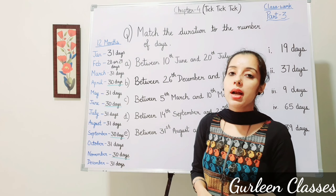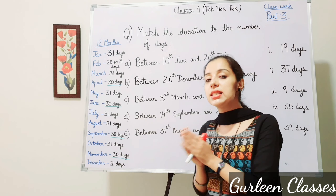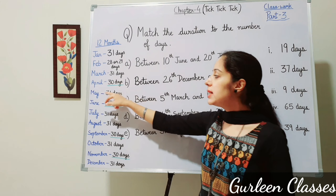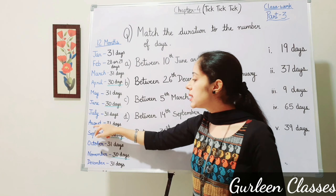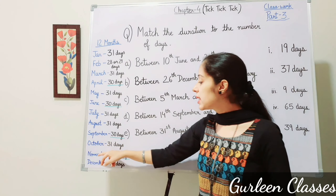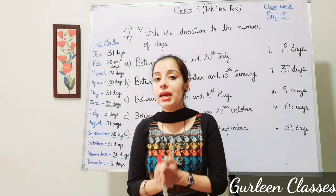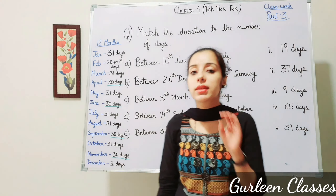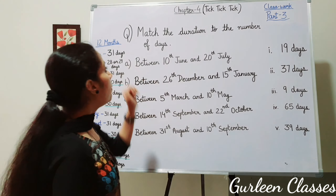January has 31 days. February has 28 or 29 days — we call it a leap year, which comes once every four years and has 29 days. March has 31 days, April has 30 days, May has 31 days, June has 30 days, July has 31 days, August has 31 days, September has 30 days, October has 31 days, November has 30 days, and December has 31 days. Remember: April, June, September, and November have 30 days.